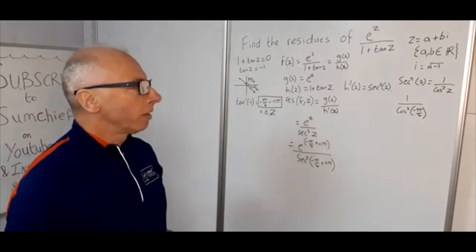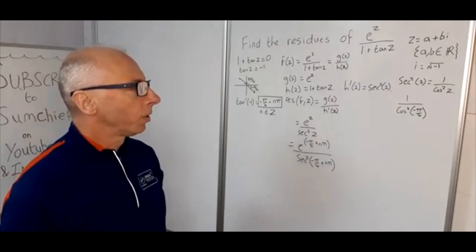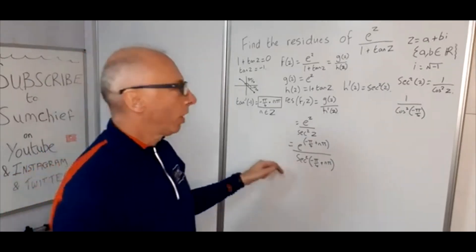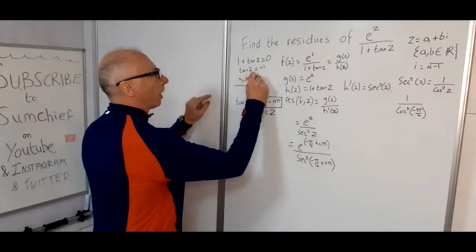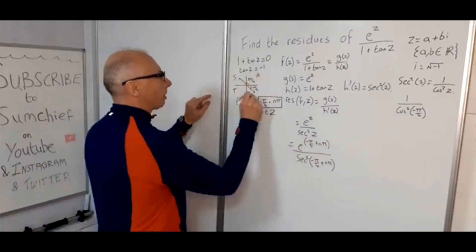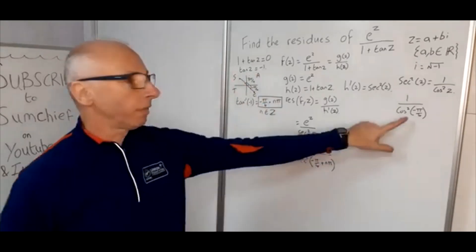Well, cosine at minus π over 4—well we know that to be 1 over... where is cosine? Let's have a look. A, S, T, C. So cosine is positive at this point.